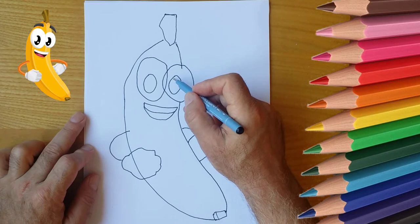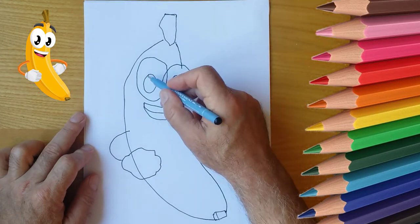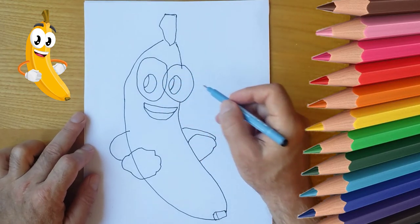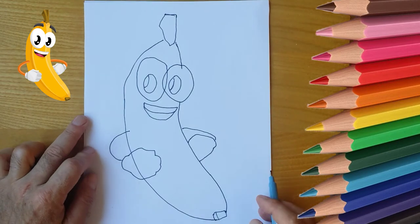And we take up the paint. Take the yellow color and draw a banana.